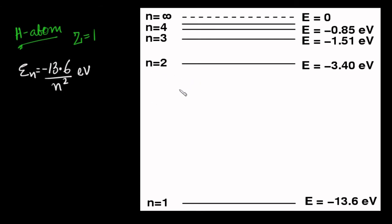Here is an energy level diagram. The energy levels are shown: n equals 1 has energy minus 13.6, n equals 2 is minus 3.4, n equals 3 is minus 1.51 (which is minus 13.6 divided by 9). n equals 4 and so on, and n equals infinity corresponds to 0.